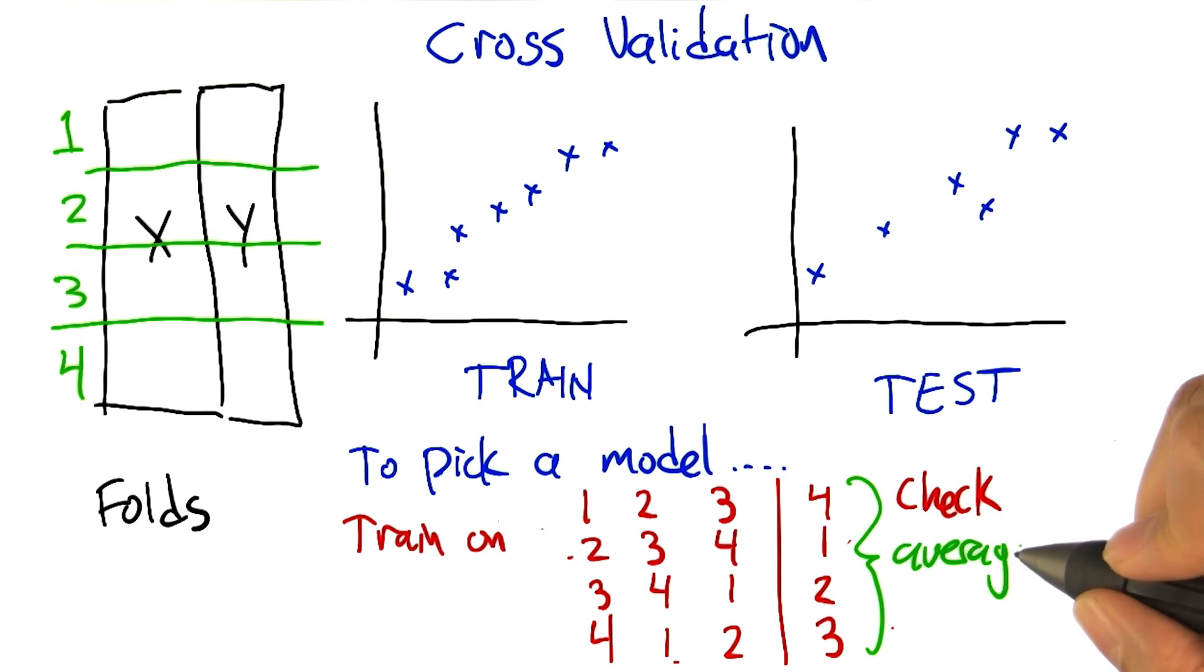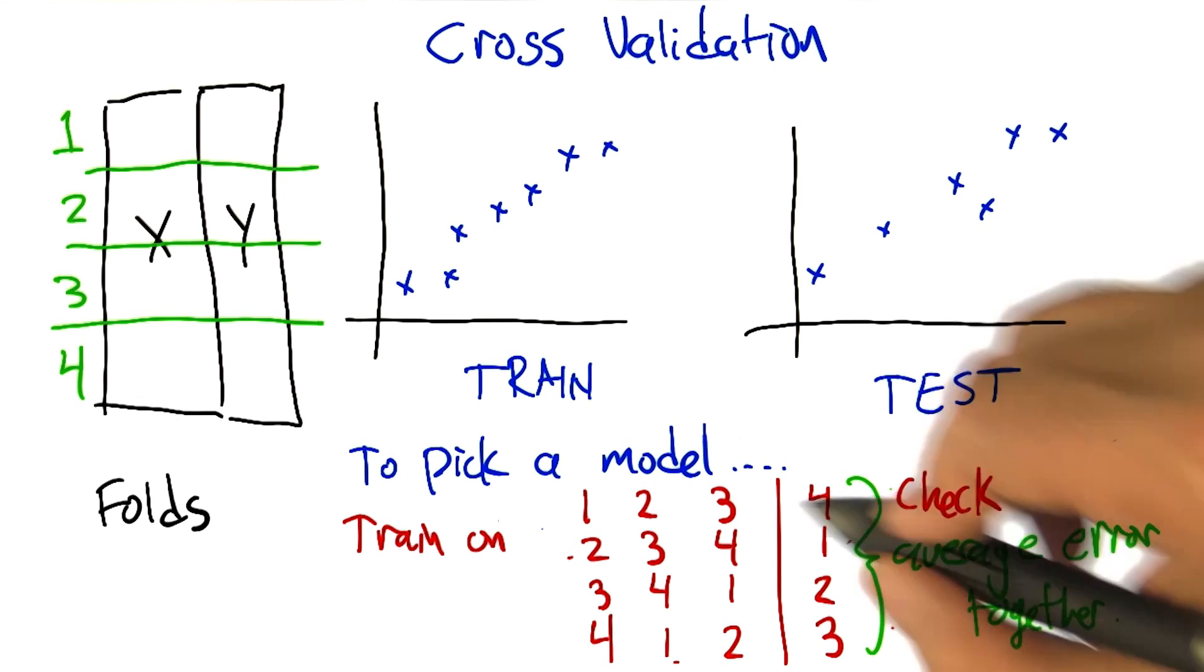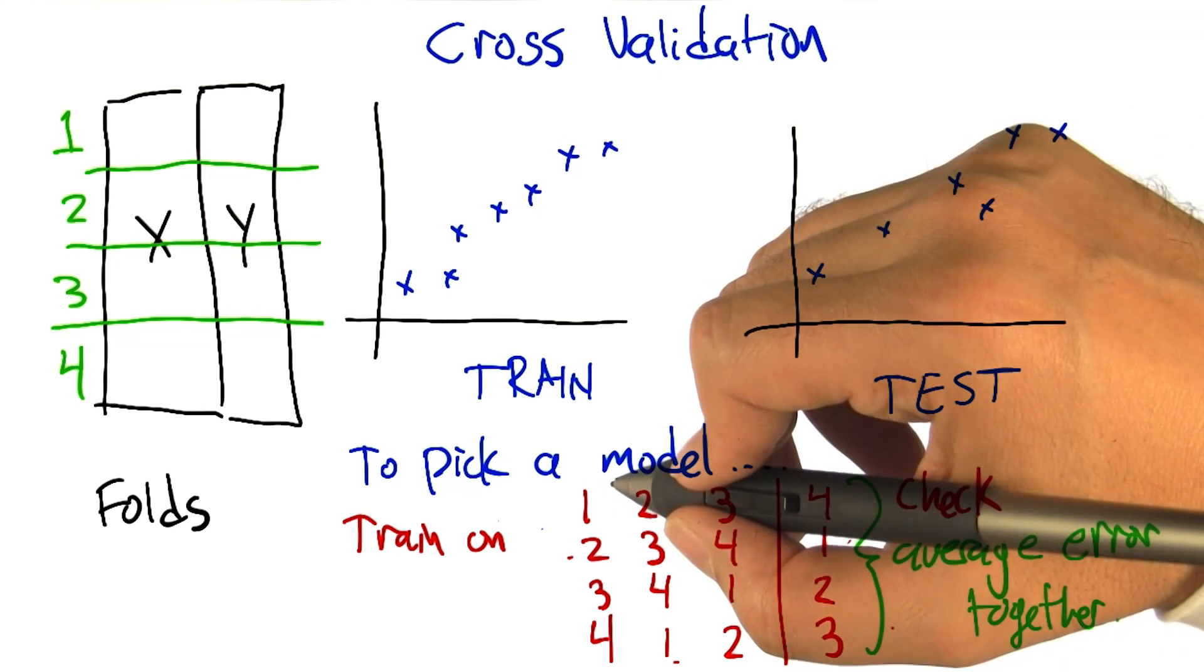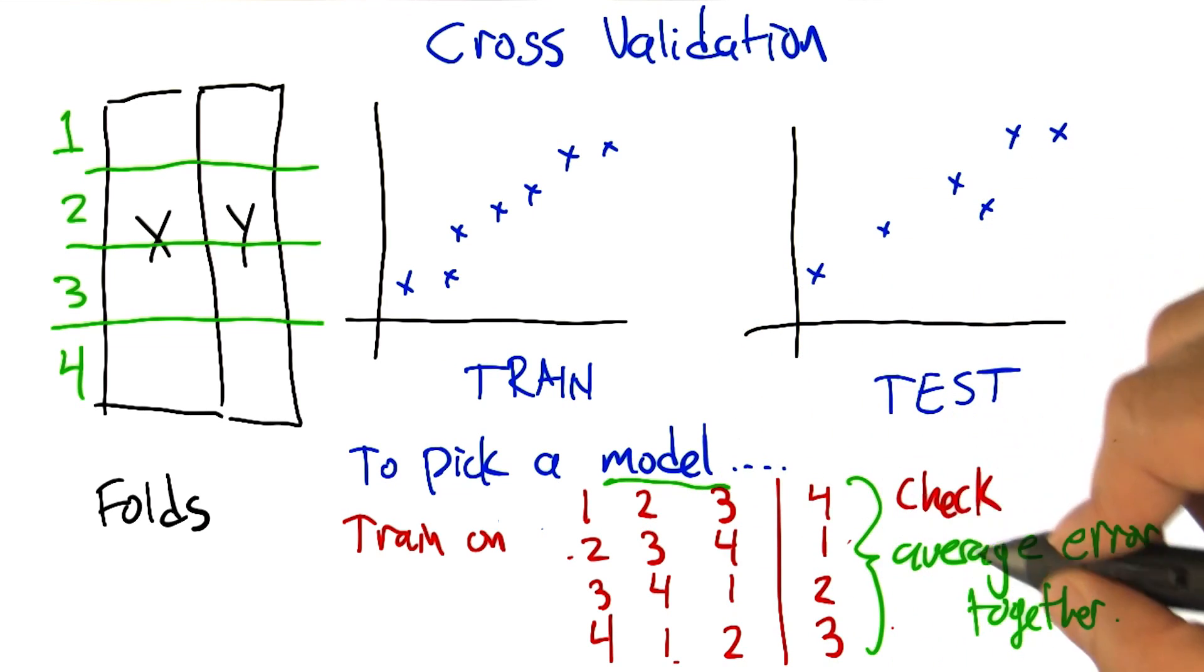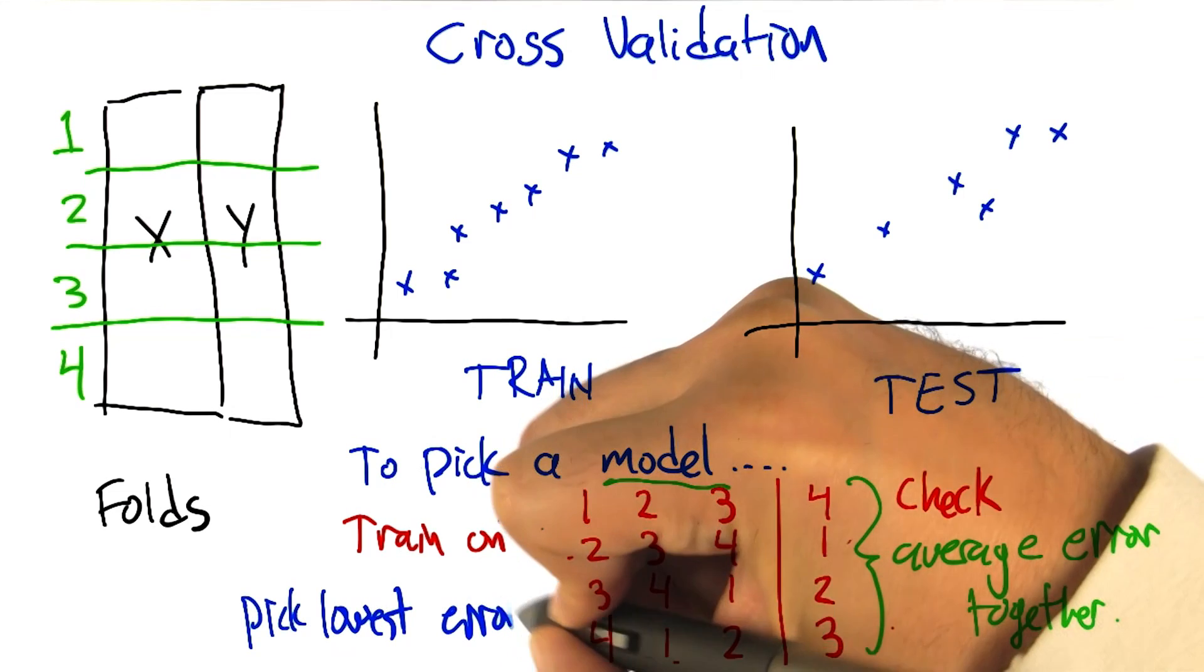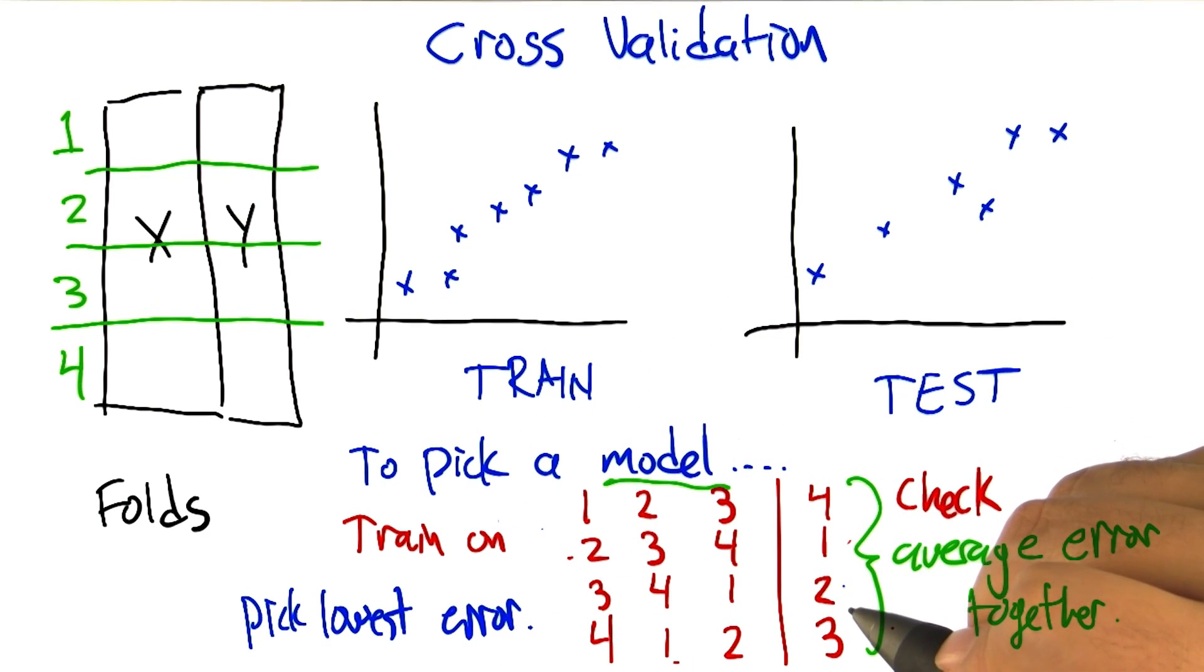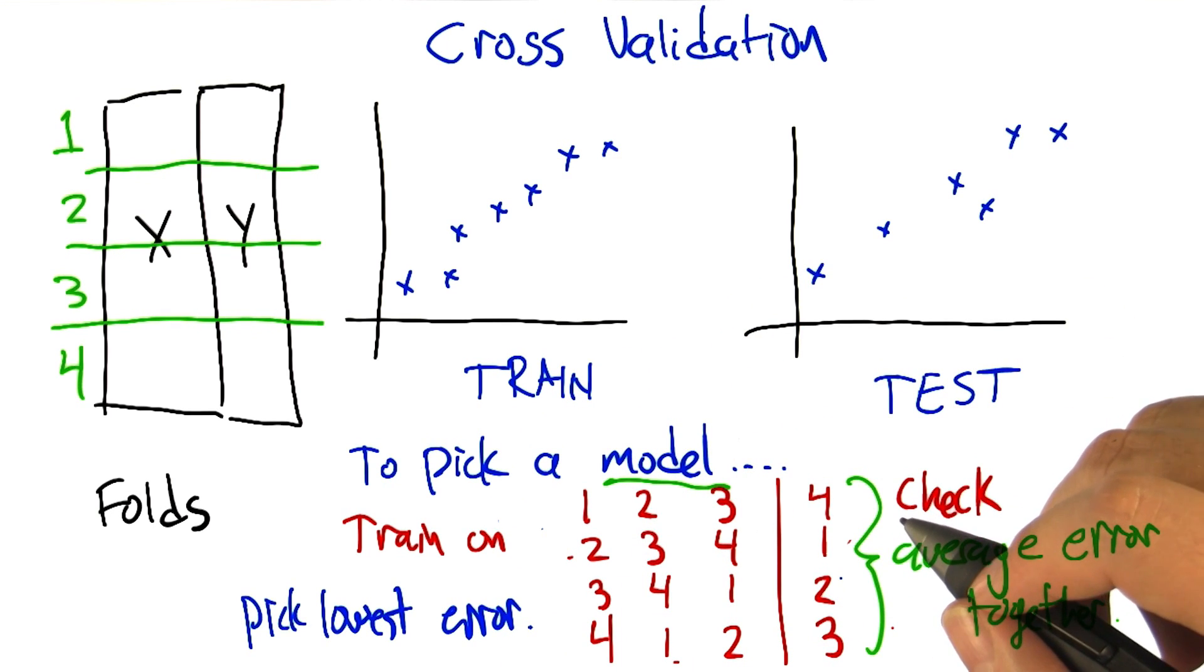And then average all these errors, the goodness of fit. Average them all together to see how well we've done. And the model class, so like the degree of the polynomial in this case, that does the best job, the lowest error, is the one that we're going to go with. Alright, so if this is a little bit abstract still, let me ground this back out in the housing example.